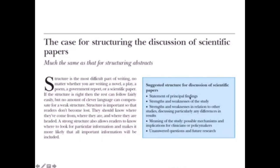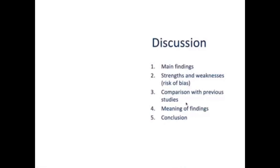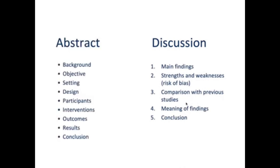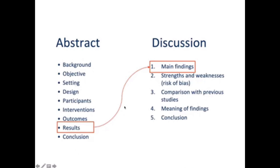We write the main findings, then the strengths and weaknesses. Once we know the main findings and strengths and weaknesses, we know whether the results are valid. We can describe our results by taking the text from the abstract and putting that into the main findings of the discussion.